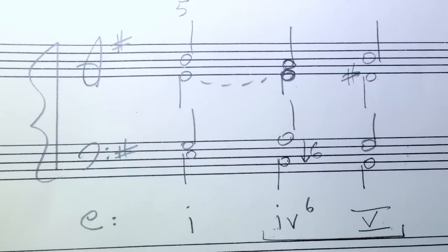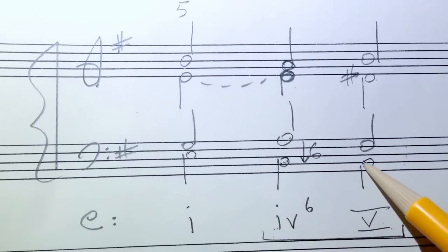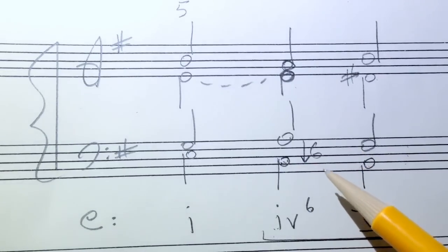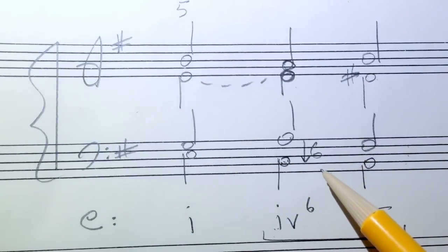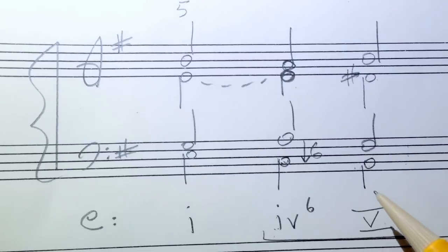And that is a Phrygian cadence. And the Phrygian element about it is this lowered, this half step between the bass scale degree six and five, which is an element in a Phrygian scale when it moves from its flat two to scale degree one, and that is the Phrygian element about it.